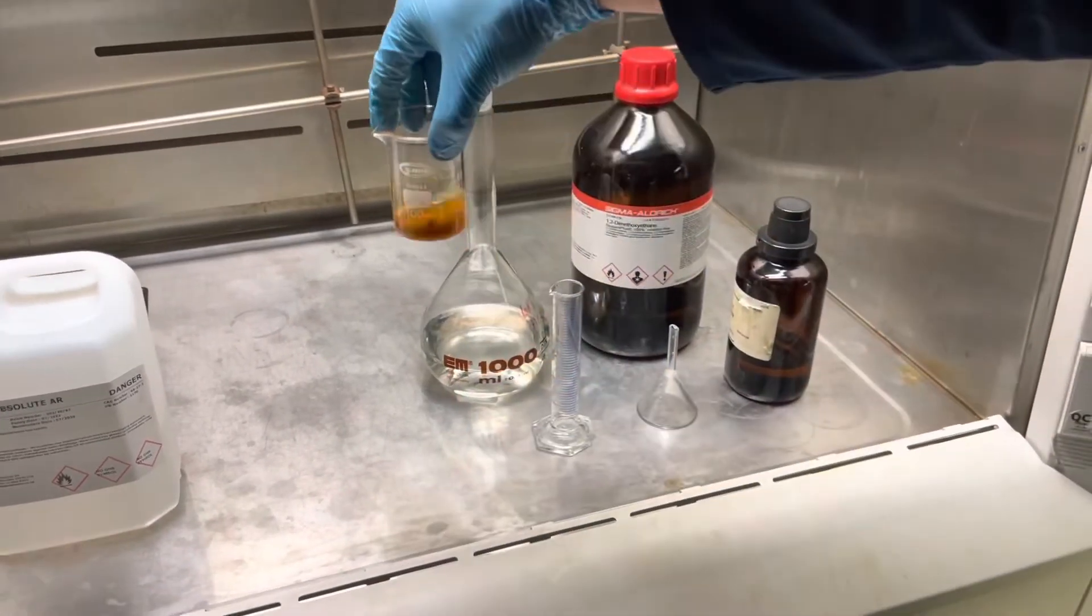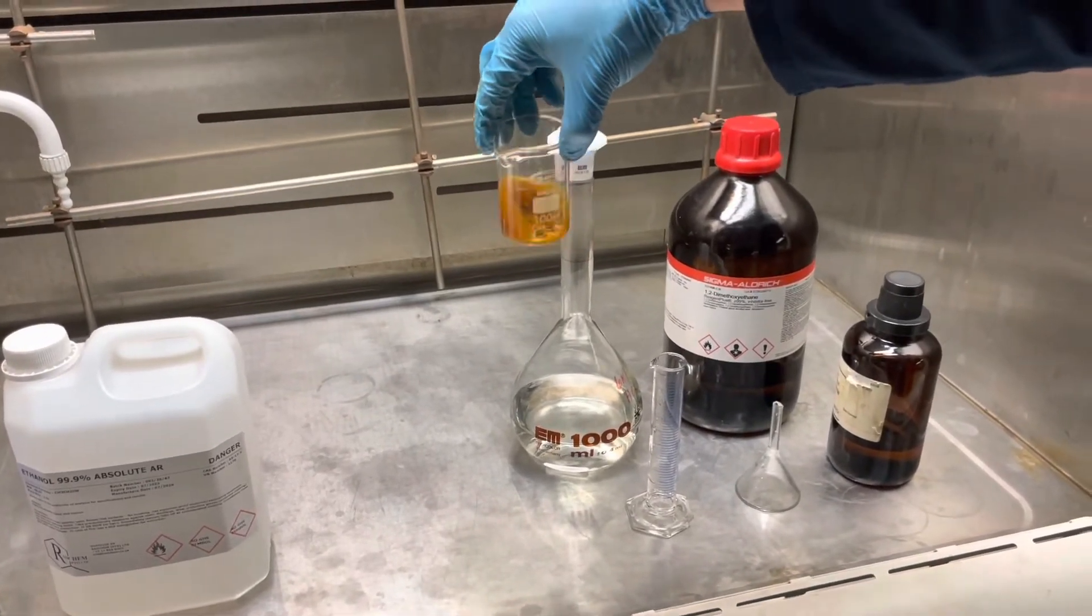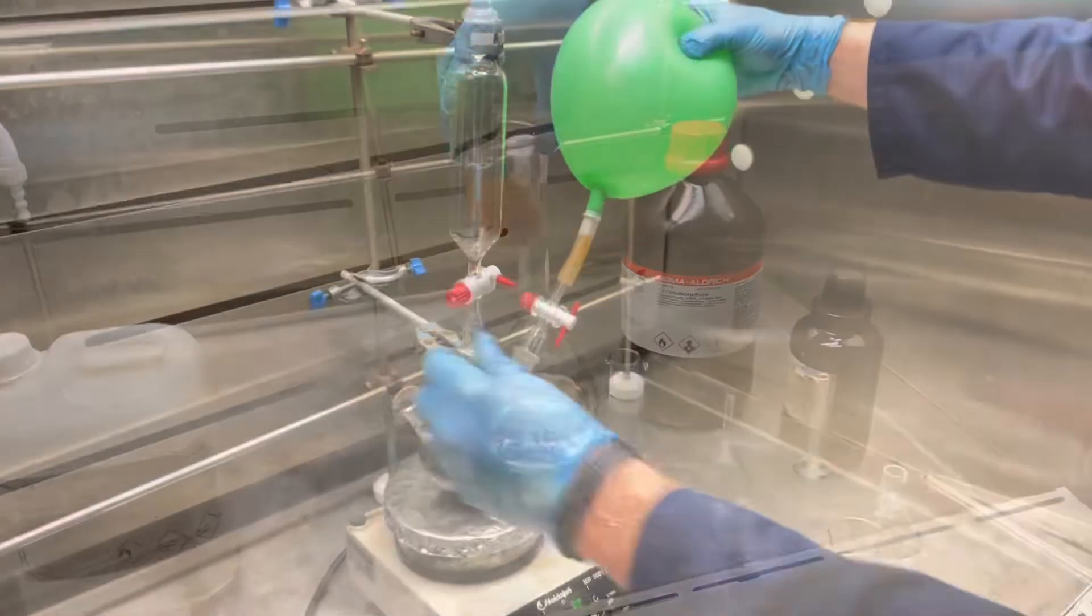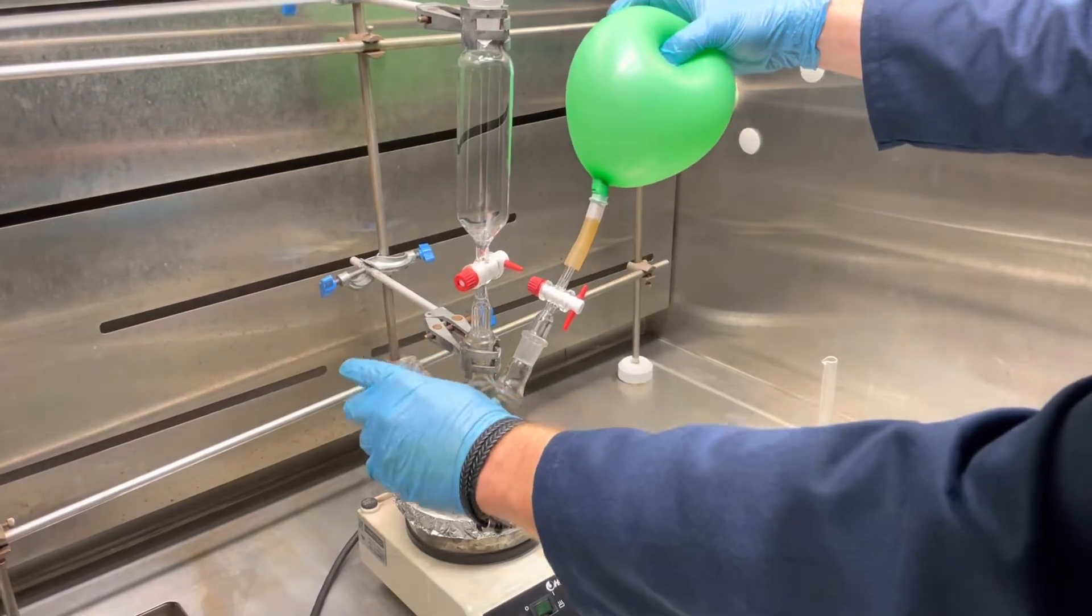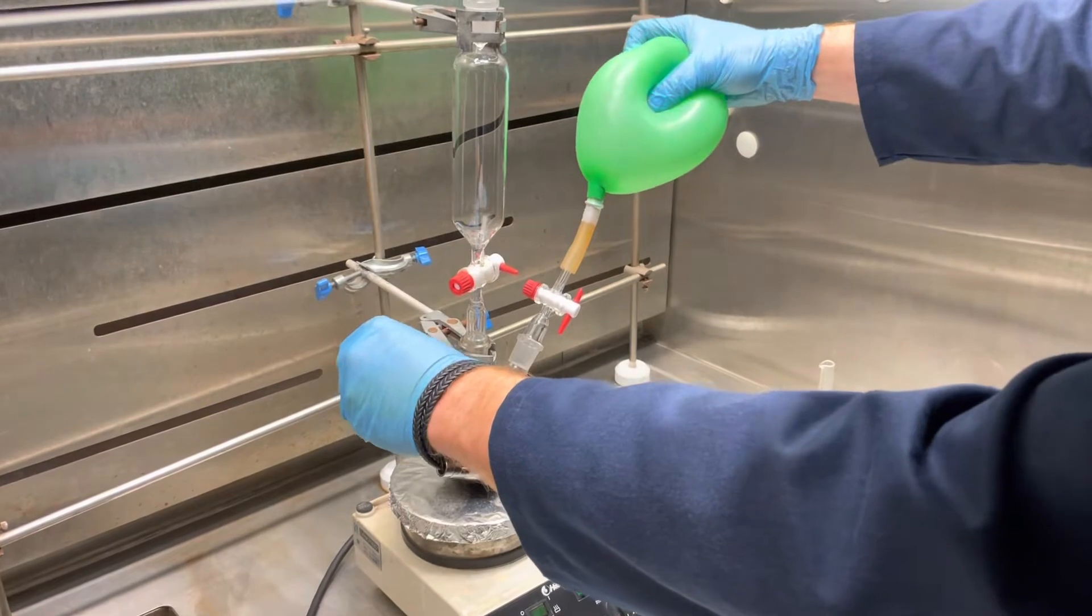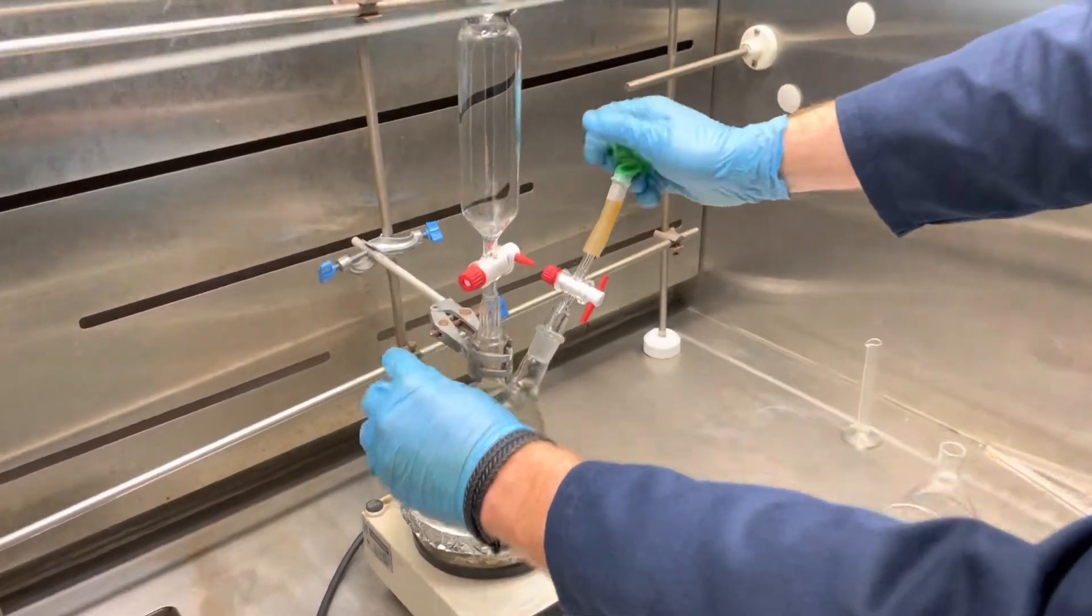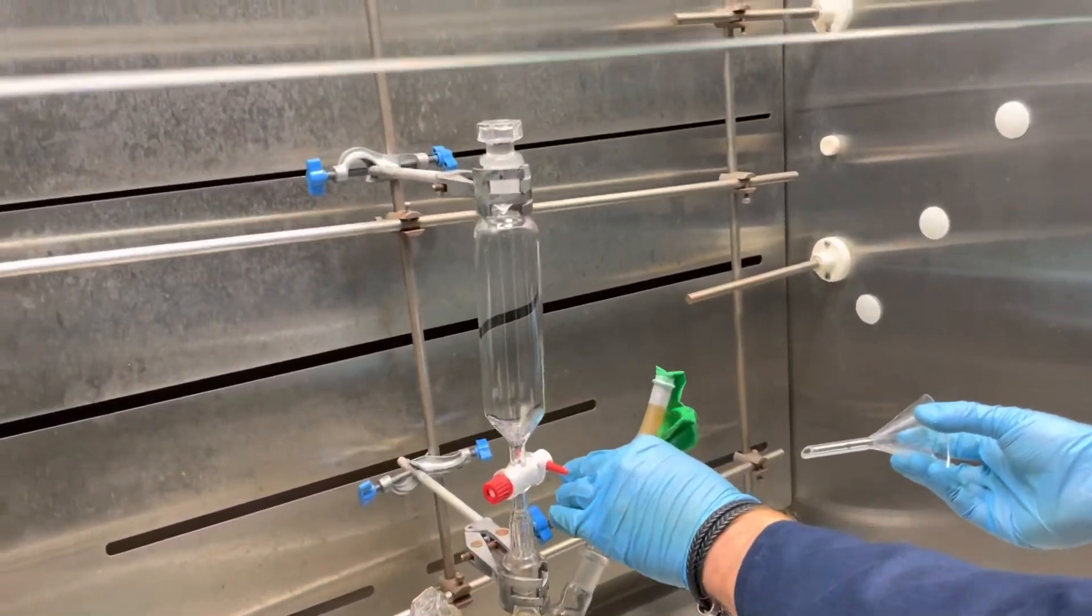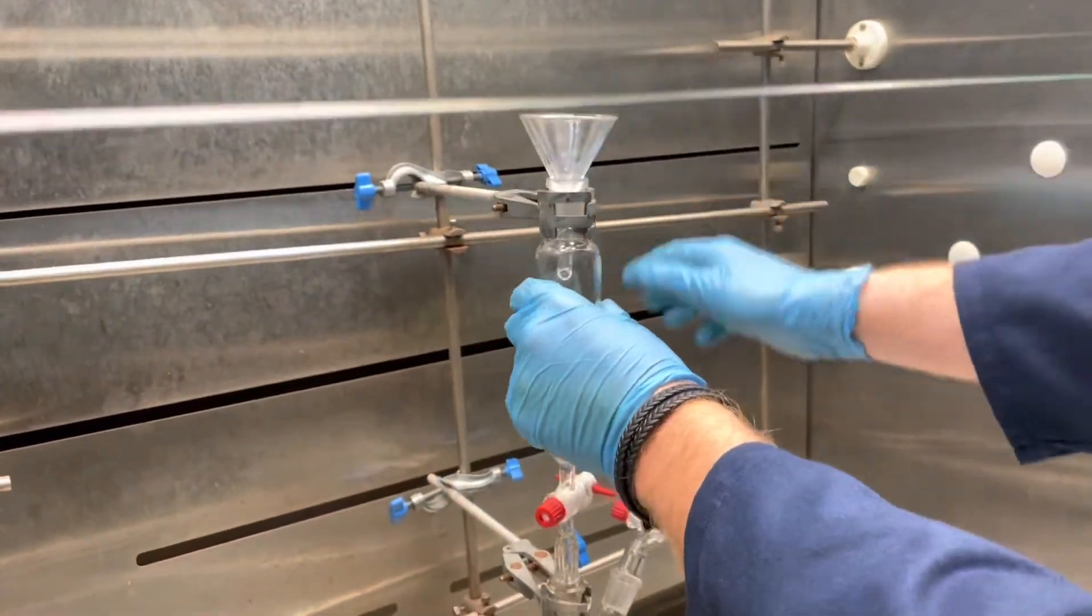This will be added to the dropping funnel at the top of your three-neck flask setup. Before adding your iron chloride DMSO solution, purge your system again using your balloon with nitrogen. Now add your ferrous chloride DMSO mixture at the top of your dropping funnel.